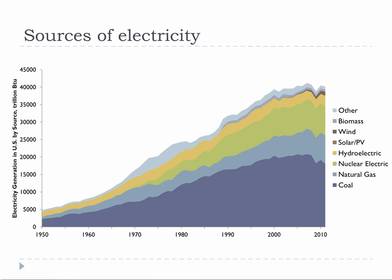Electricity is often regarded as a clean power source due to its low emissions when used by you and me. The generation of electricity, however, often involves the use of large amounts of fossil fuels and incurs a significant amount of carbon dioxide emissions. Over 50% of the electricity generated in the U.S. comes from power stations fueled by coal and natural gas. As a result, electricity generation is responsible for around 32% of the greenhouse gas emissions in 2012.